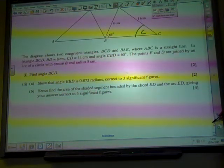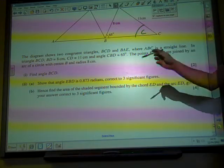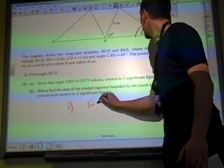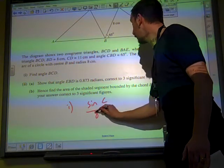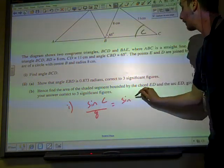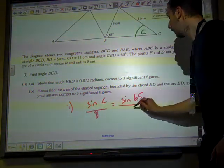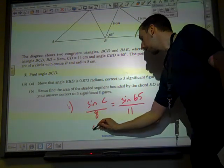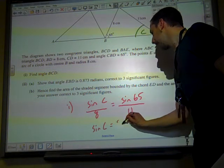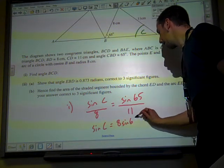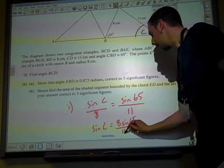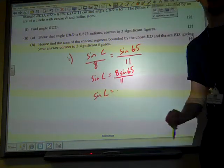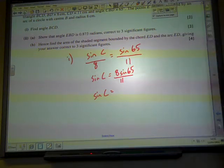If we want to know the angle, we put the sine bit on the top. So for part one, we're going to say that sin C over 8 equals sin 65 over 11. And if we rearrange that, sin C is 8 sin 65 over 11, which gives us some value for sin C.